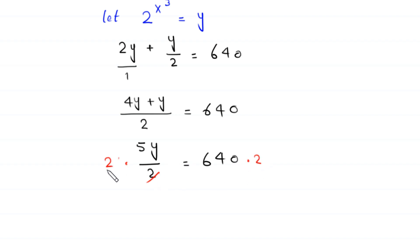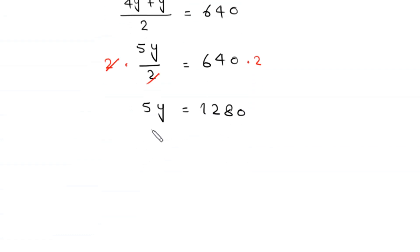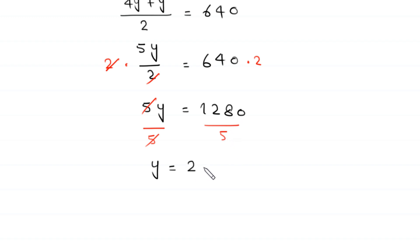This 4y plus 1y becomes 5y divided by 2, equal to 640. The 2 on the left cancels, leaving 5y equal to 640 times 2, which is 1280. Dividing both sides by 5, we get y is equal to 1280 divided by 5, which is 256.